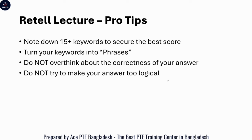Pro tips: best is to score johno, target at least around 15 plus keywords — 15 is more than good enough, but if you can get more, get more. Turn your keywords into phrases — very important. Je keyword kuno joinar-er maddhome ekta phrase, phrase pore noto kore, describe kora ba retell kora. Do not overthink about the correctness of your answer — very important.